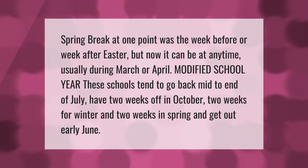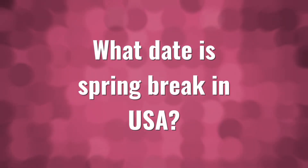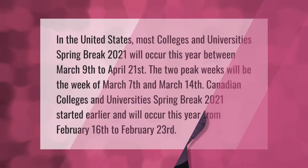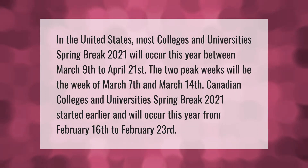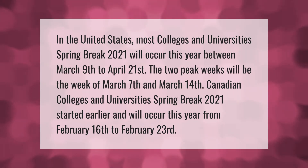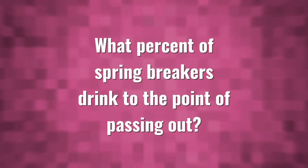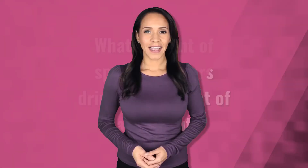In the United States, most colleges and universities spring break 2021 will occur this year between March 9th to April 21st. The two peak weeks will be the week of March 7th and March 14th. Canadian colleges and universities spring break 2021 started earlier and will occur this year from February 16th to February 23rd.